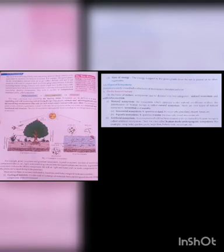There are two basic processes conducted by the abiotic and biotic components in an ecosystem. First, cycling of materials — the cycle of exchange of materials between living and non-living components of the environment. Second, flow of energy — the energy trapped by the green plants from the sun is passed on to other organisms.